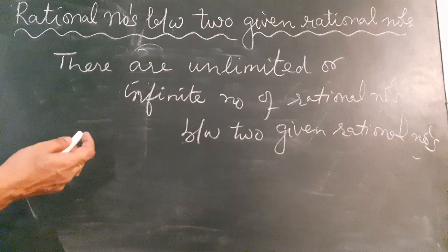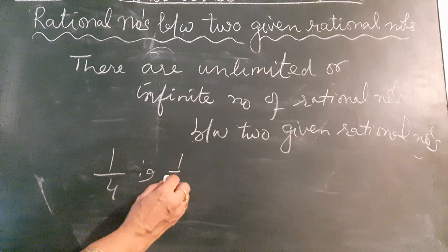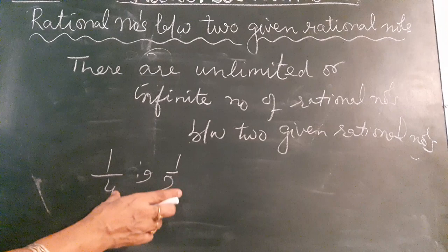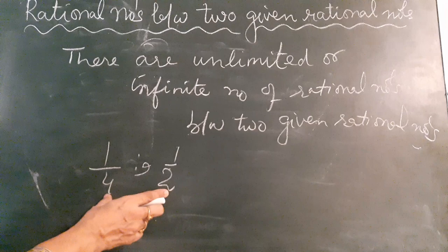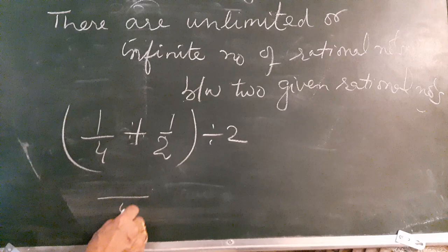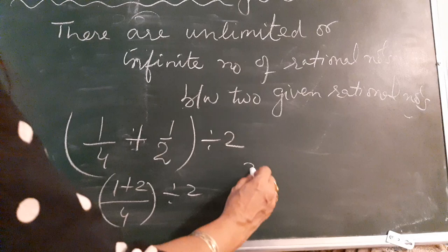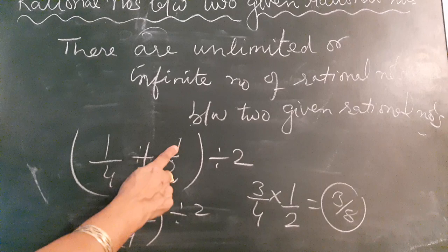If we have to find one rational number between 1/4 and 1/2, there is another method: add both numbers and divide by 2, meaning find the average. Take the LCM of 4 and 2, which gives 3/4. Then dividing by 2 means multiplying by 1/2, giving 3/8. So the number between 1/4 and 1/2 is 3/8.